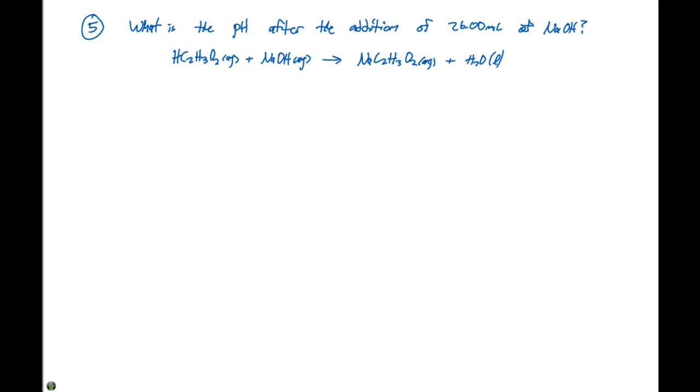The last point we're going to analyze in our titration curve is what is the pH after the addition of 26.00 milliliters of sodium hydroxide? Here we're going to be past the end point.